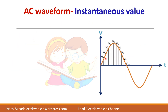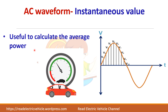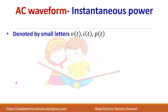The instantaneous value: at every instant, the waveform has a different magnitude. This is similar to travelling in a city at different speeds — your instantaneous speed changes every moment, but you can calculate an average speed. Similarly, instantaneous values are used to calculate average power. Instantaneous values are represented by small letters: V(t) for voltage, I(t) for current, and P(t) for power, where 't' indicates they are functions of time.